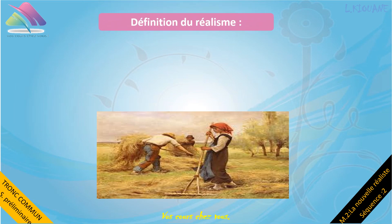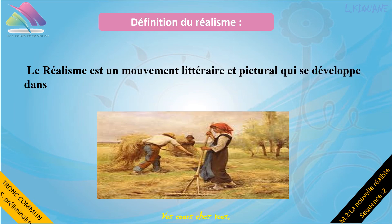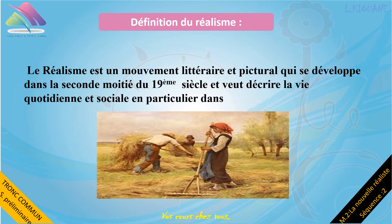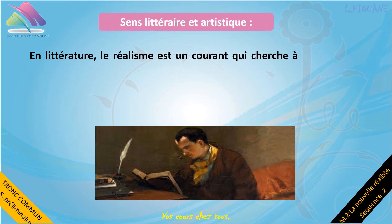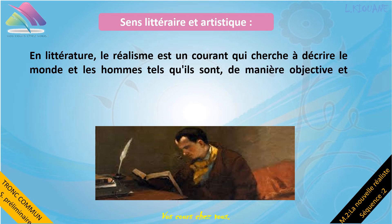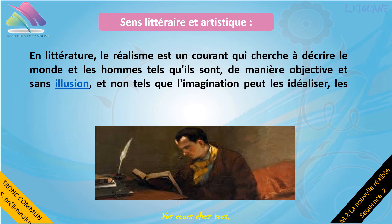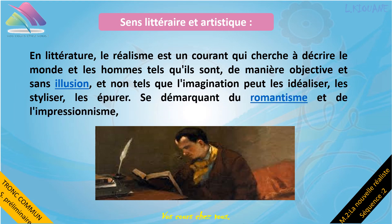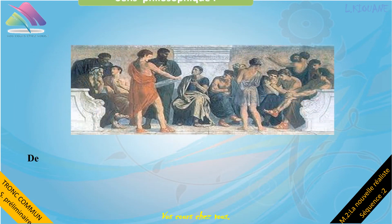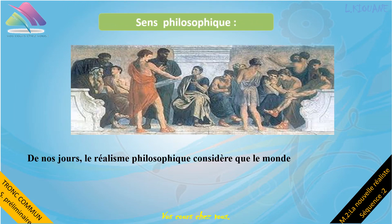Pour définir le réalisme, nous dirons : le réalisme est un mouvement littéraire et pictural qui se développe dans la seconde moitié du 19e siècle et veut décrire la vie quotidienne et sociale, en particulier dans les milieux défavorisés. En littérature, le réalisme est un courant qui cherche à décrire le monde et les êtres tels qu'ils sont, de manière objective et sans illusion, et non tels que l'imagination peut les idéaliser, les styliser ou les épurer. Se démarquant du romantisme et de l'impressionnisme, il est apparu au 19e siècle vers 1830. De nos jours, le réalisme philosophique considère que le monde extérieur dispose d'une existence propre qui est indépendante du sujet qui le perçoit.